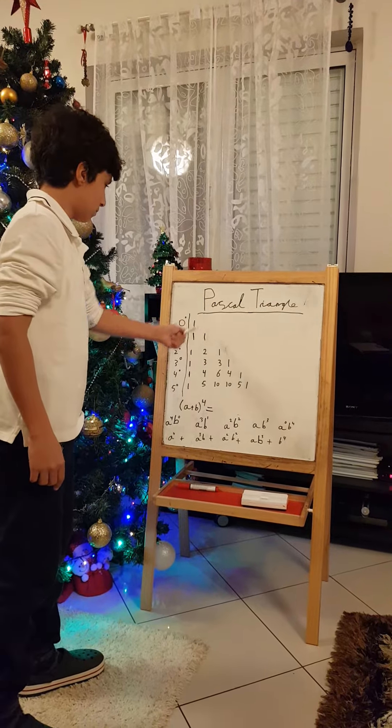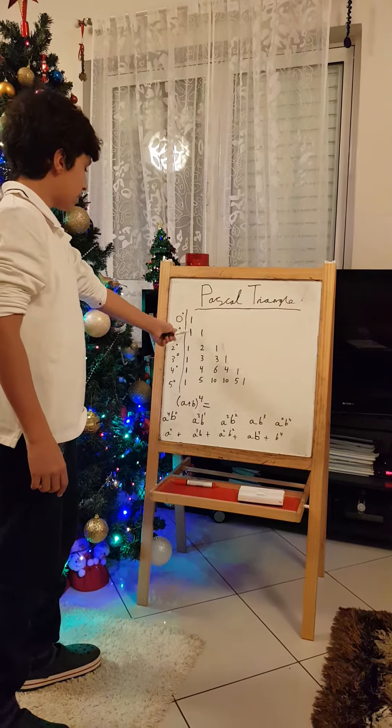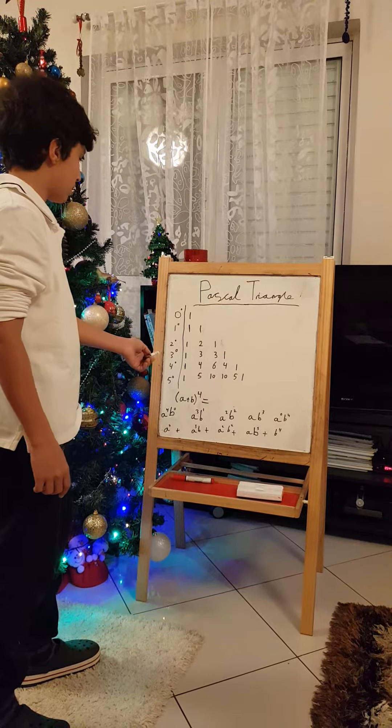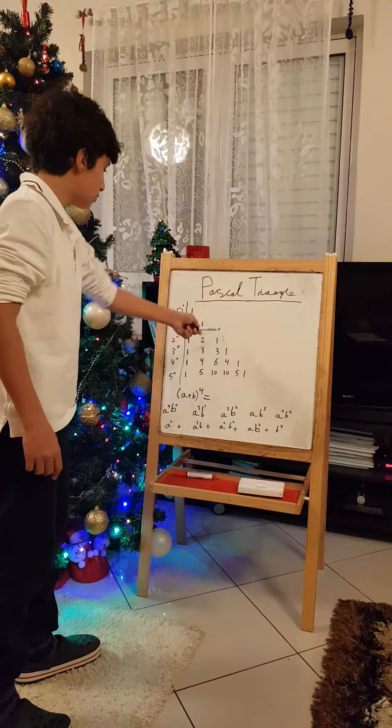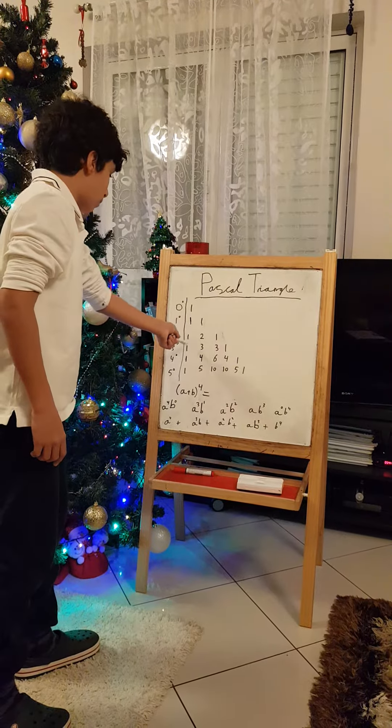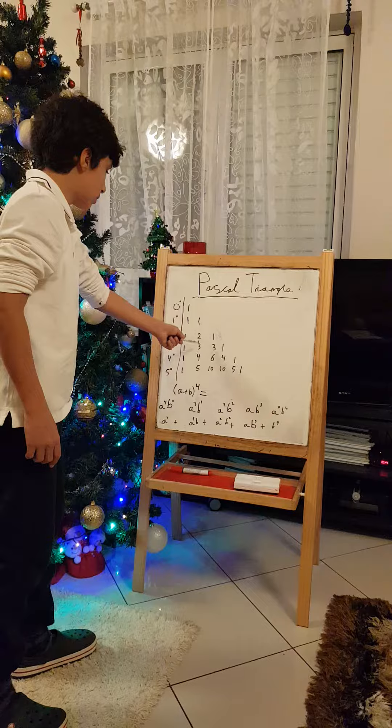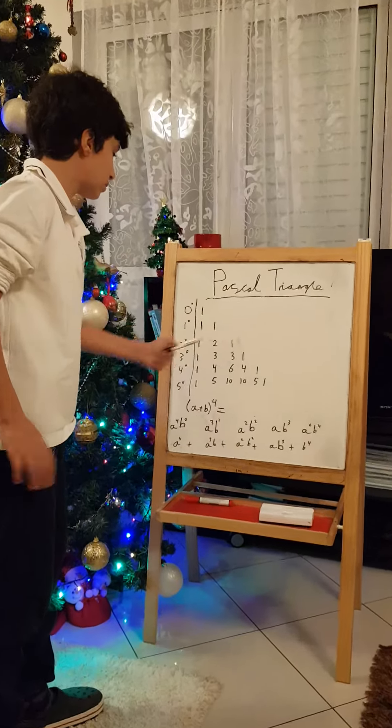We start with 1. Then we drop 1 and we drop 1 there. Then we drop 1, 1 plus 1 equals 2, then we drop it. For this one, we drop 1, 1 plus 2 equals 3, 2 plus 1 equals 3, and we drop 1.